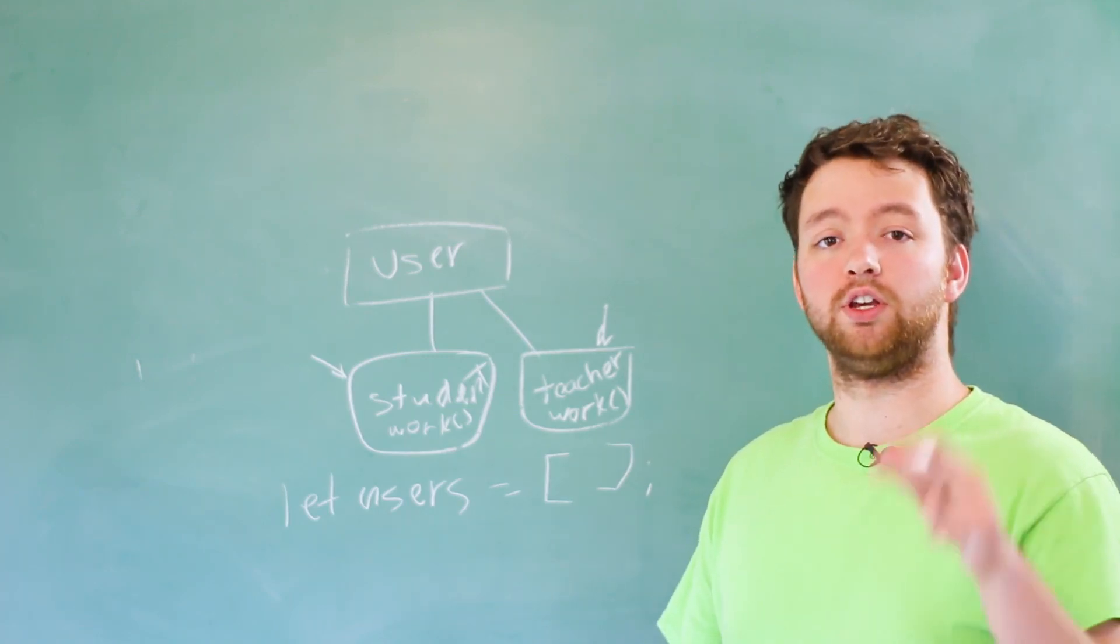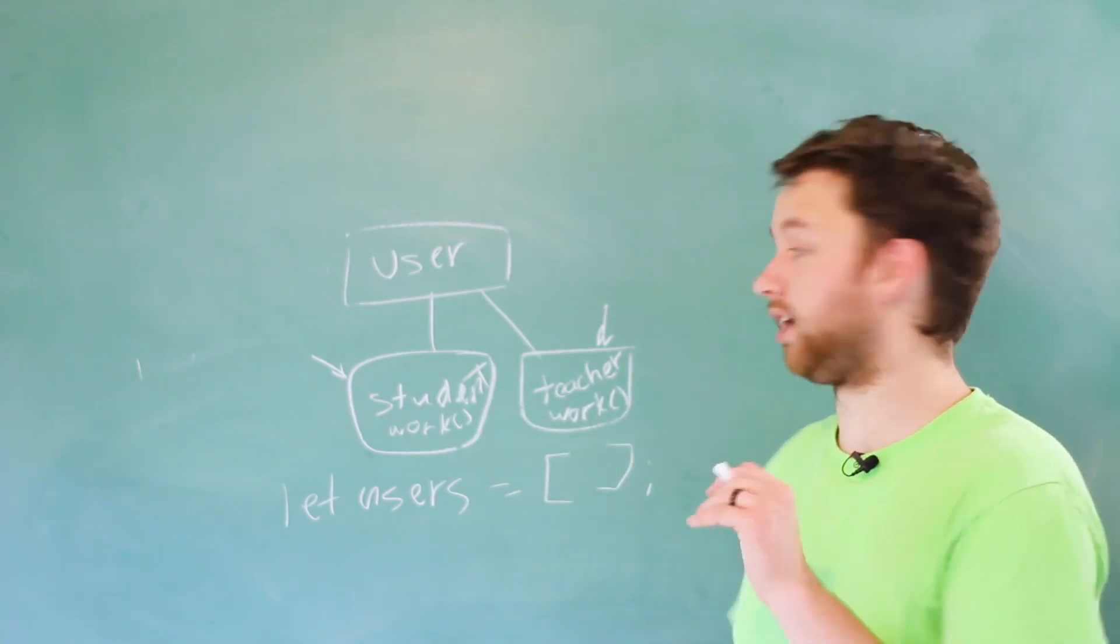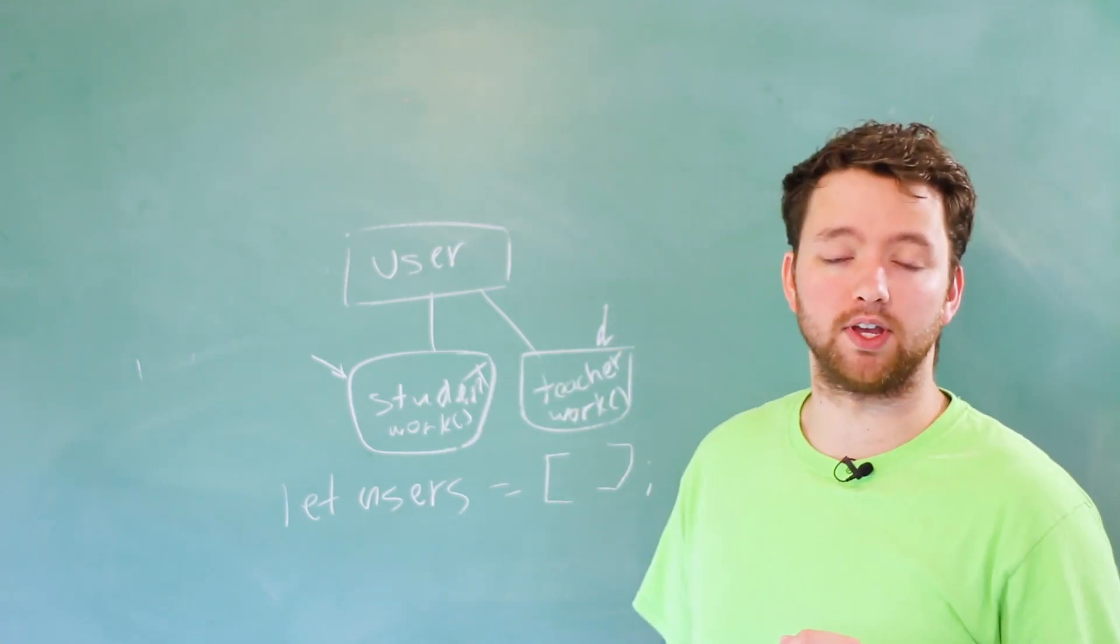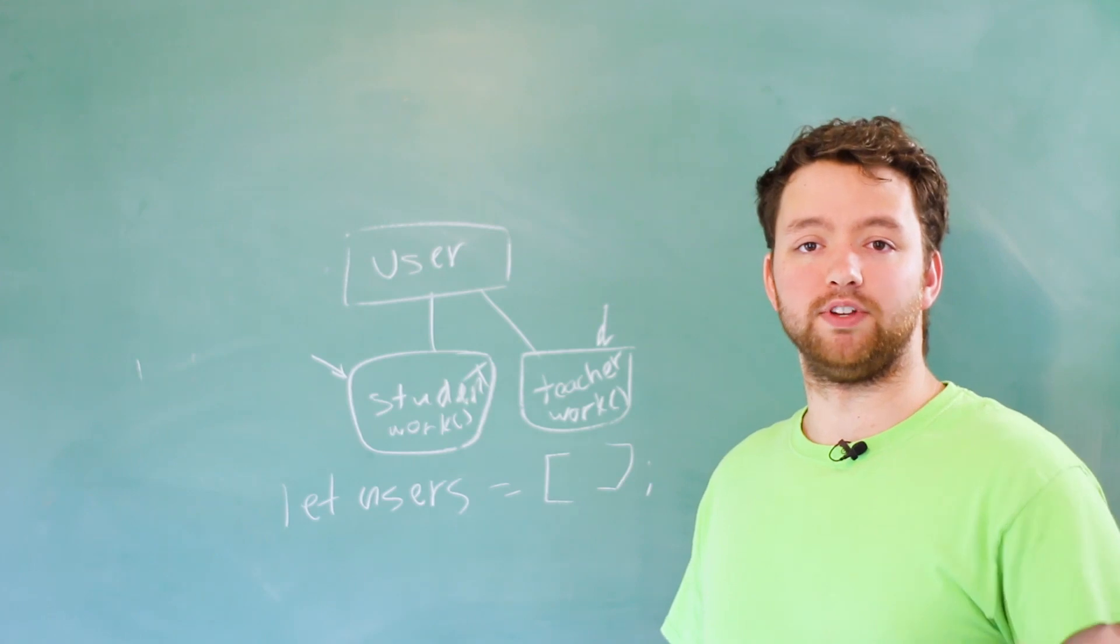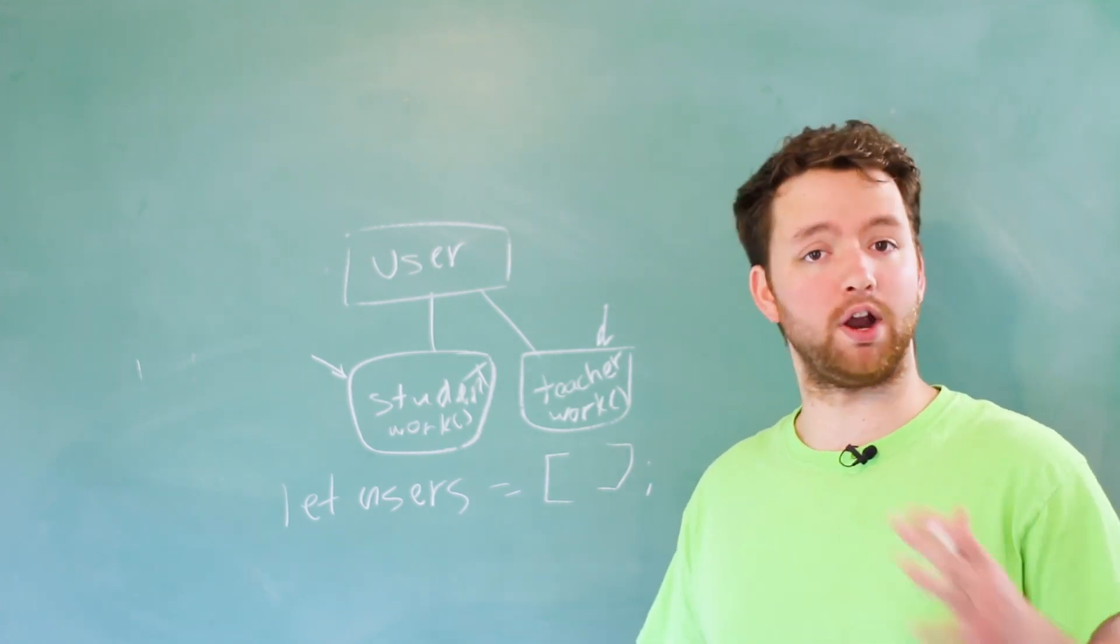And using our collection of users, we can just say, yo, everybody in this collection, you guys need to start working. And the students will do the appropriate thing. And the teachers will do the appropriate thing. So that's one example of how polymorphism can be useful, but there's lots of other cases you're going to find inside of the object oriented paradigm.